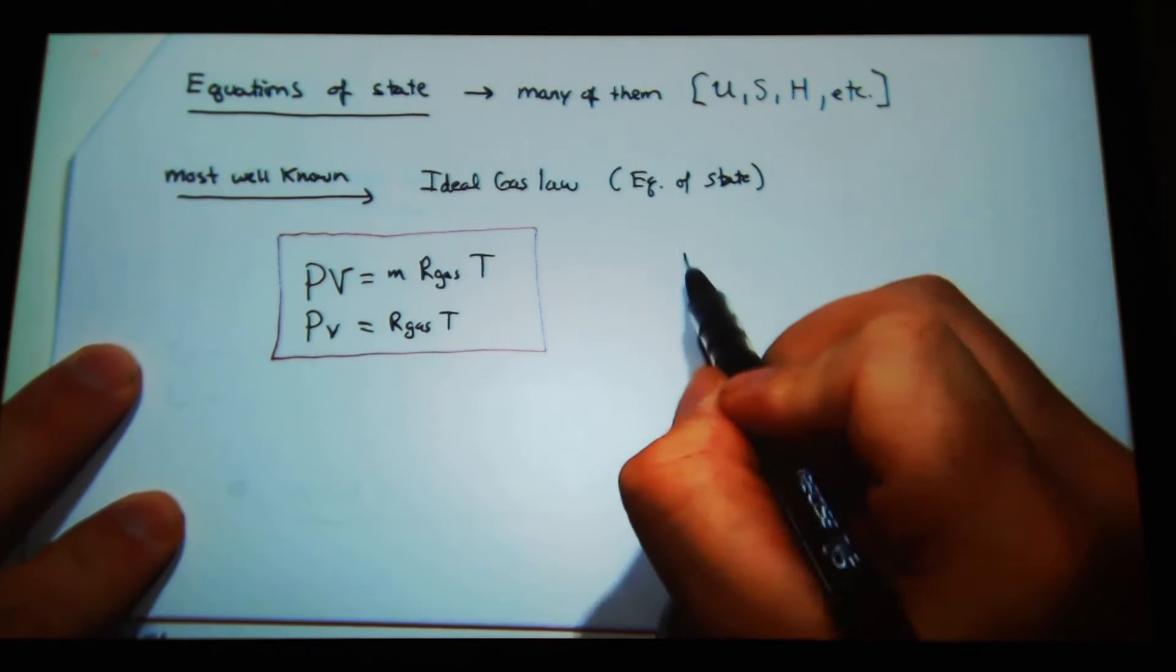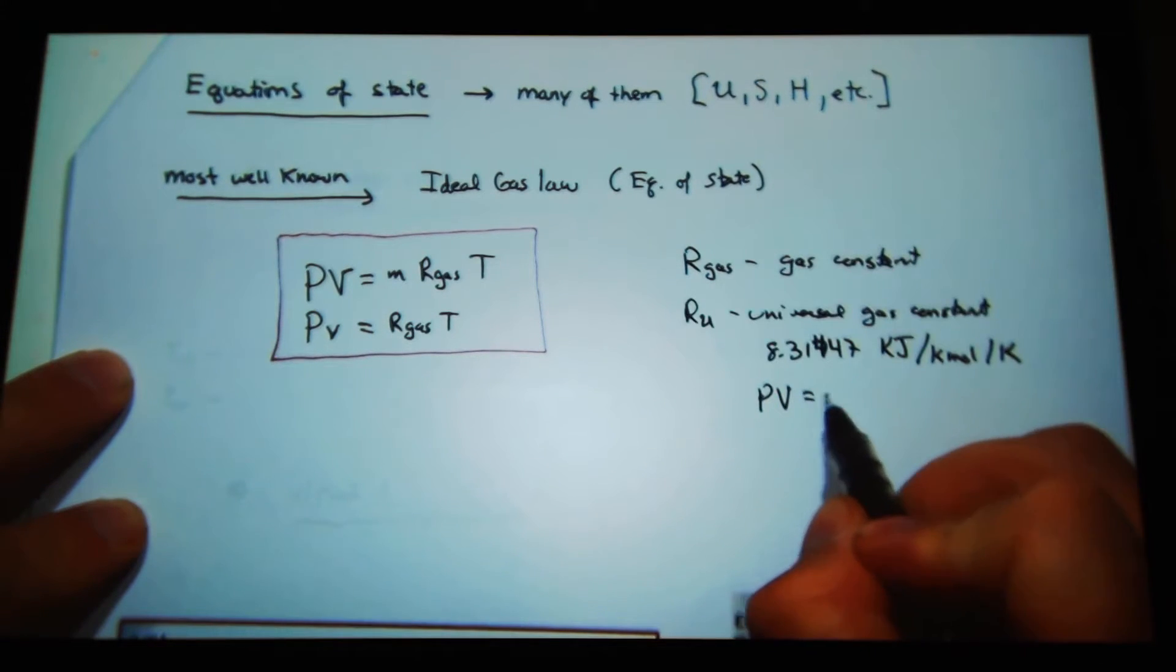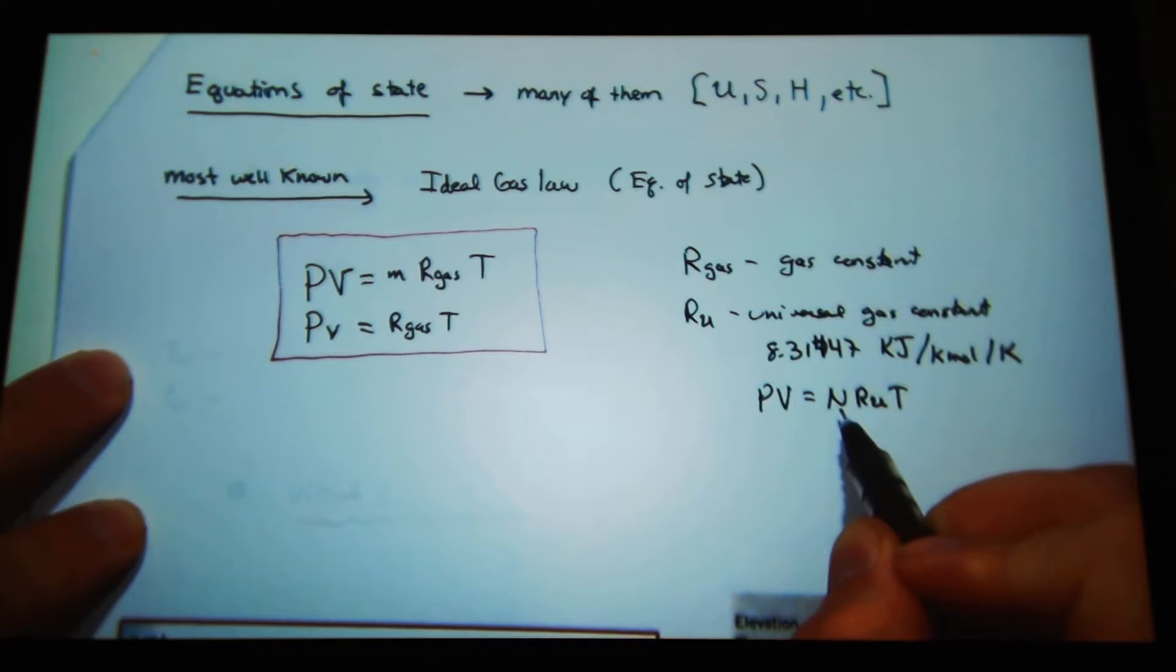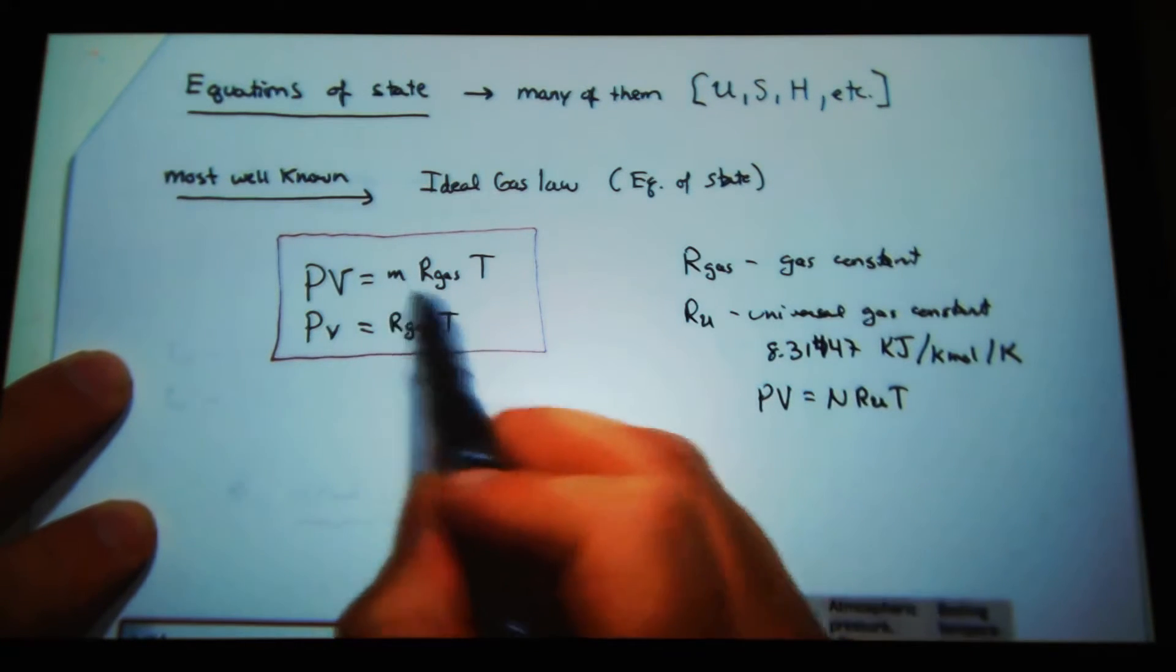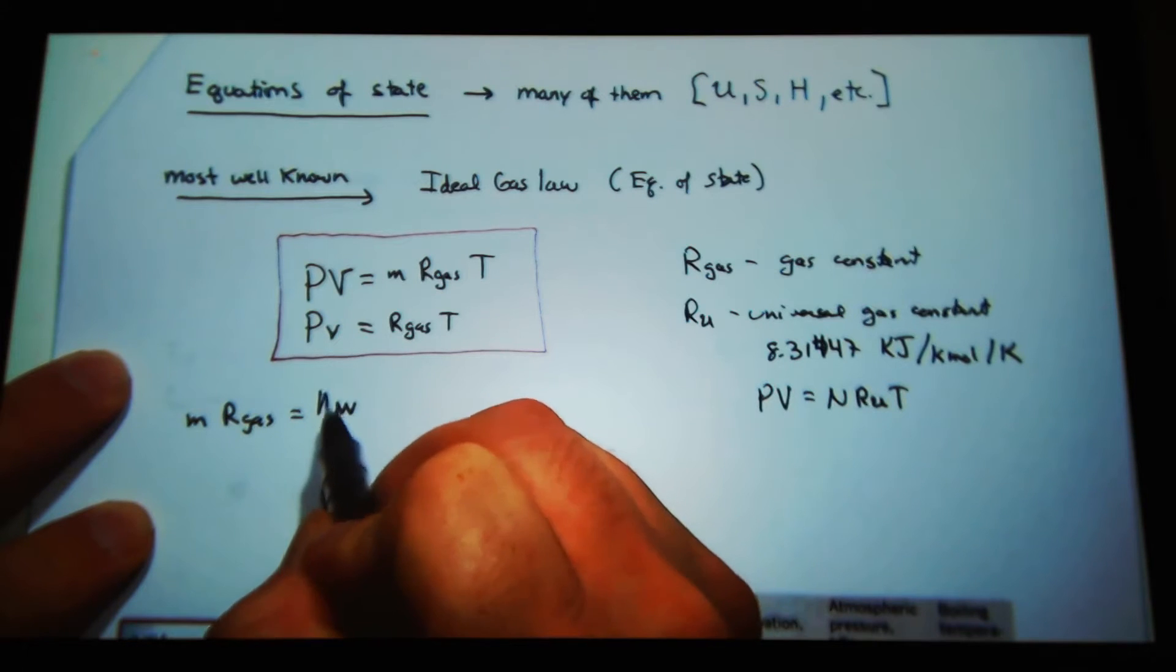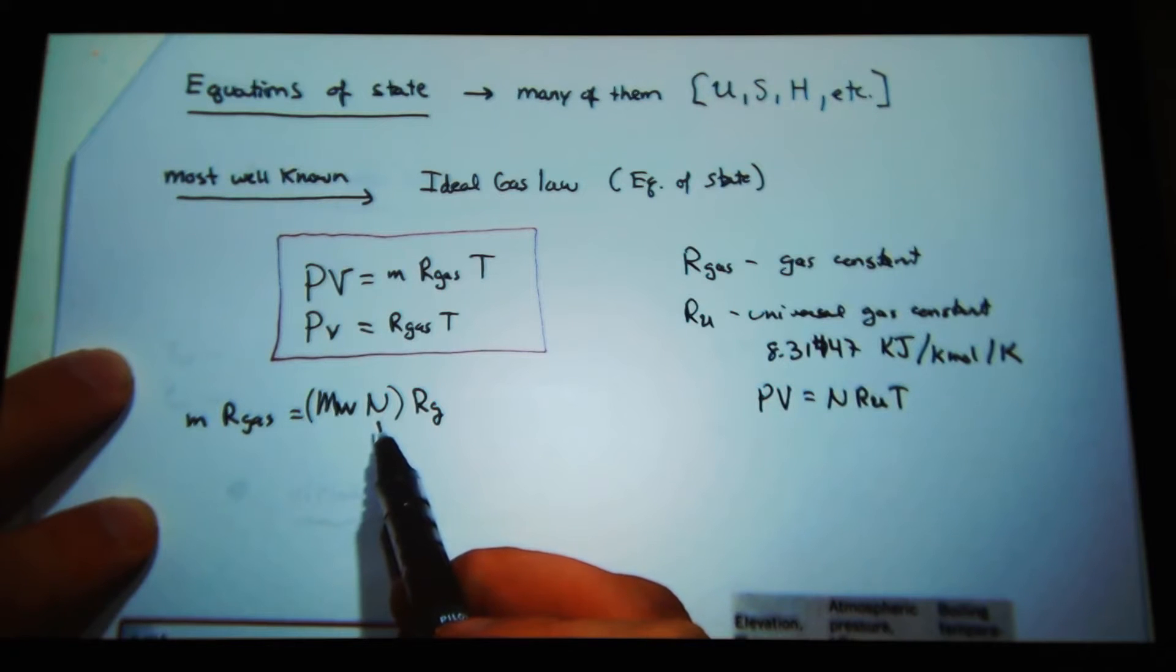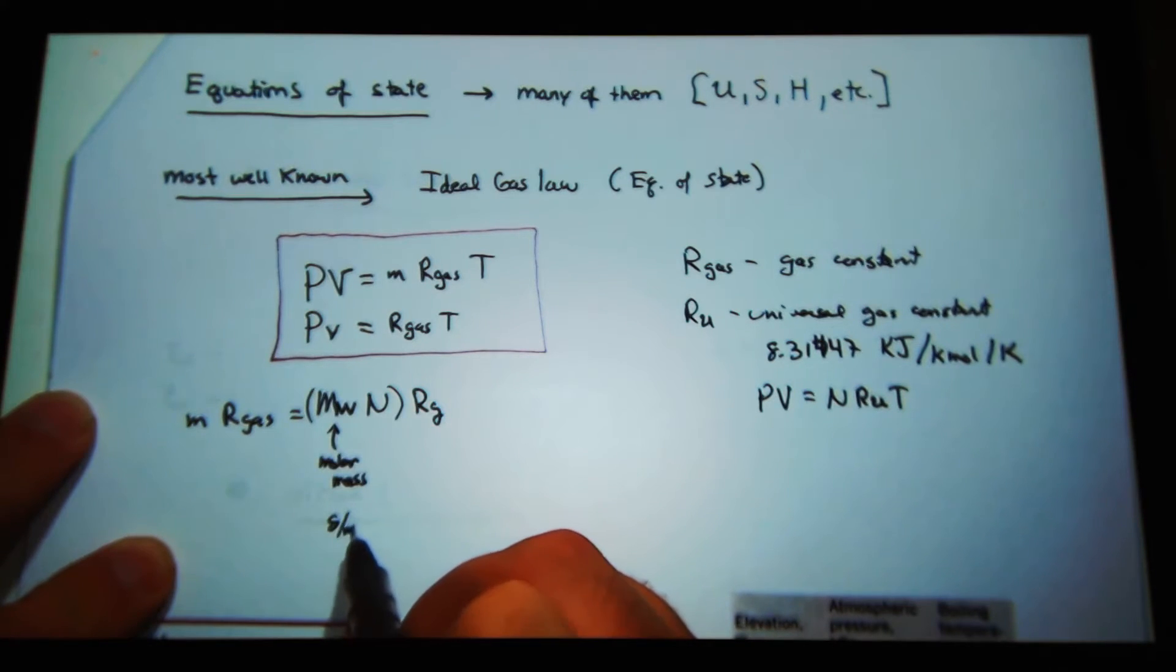For reference, this is the gas constant. PV equals N R_u T, where now this is the number of molecules or atoms. Here, this is a gas constant and a mass. And so I can relate this with this. So M R_gas equals the molecular weight times N times the gas constant.